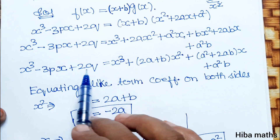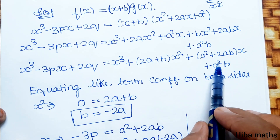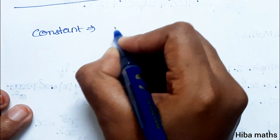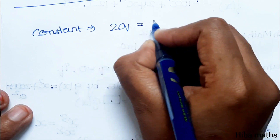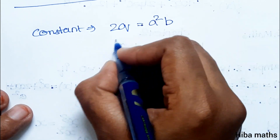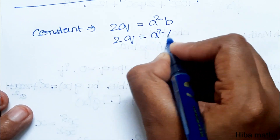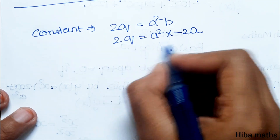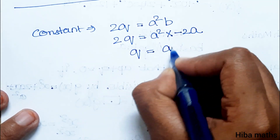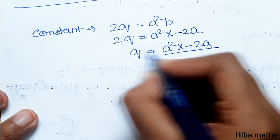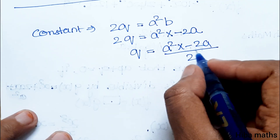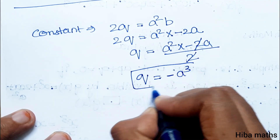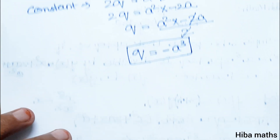Now comparing the constant terms: 2q equals a square into b. Substituting b equals minus 2a, we get 2q equals a square into minus 2a. The 2s cancel, giving q equals minus a cube.